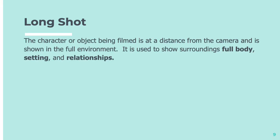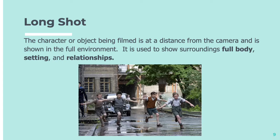Next is a long shot. The character or object being filmed in a long shot is at a distance from the camera and is shown in the full environment. It's used to show what things are surrounding, the whole body, and also to show us the setting and the relationships between characters if there's more than one in the scene. There's a wee example. You can see the whole body, a lot of the setting, and you can take a guess at the relationship between these boys as well.